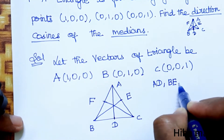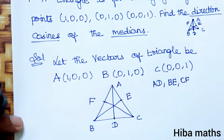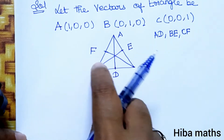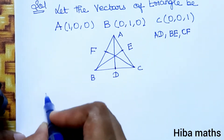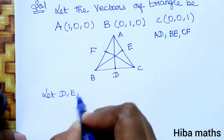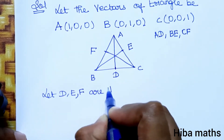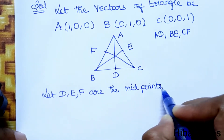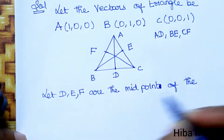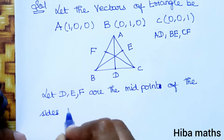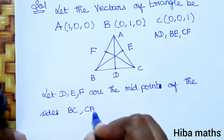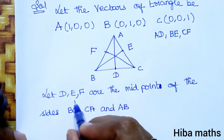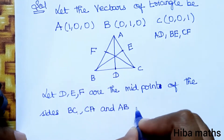Let D, E, F be the midpoints of the sides BC, CA, and AB respectively. So D is the midpoint of BC, E is the midpoint of CA, and F is the midpoint of AB.